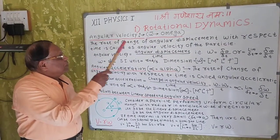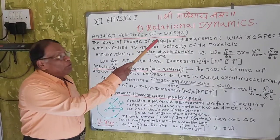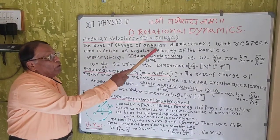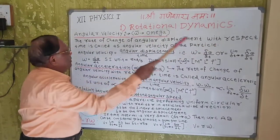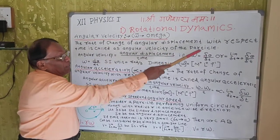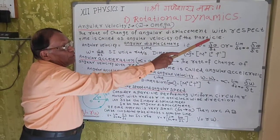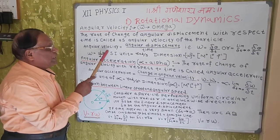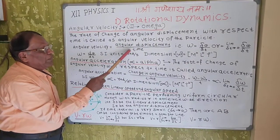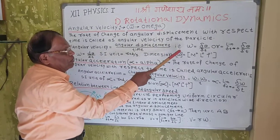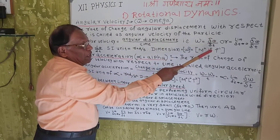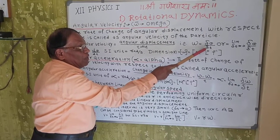First, we study angular velocity. It is denoted by the letter omega. The rate of change of angular displacement with respect to time is called the angular velocity of a particle performing uniform circular motion. Angular velocity is equal to angular displacement divided by time, that is omega equals delta theta divided by delta t.